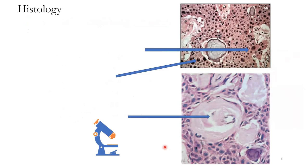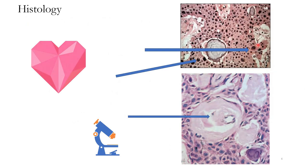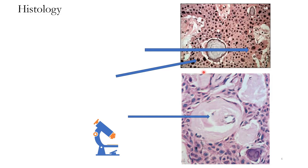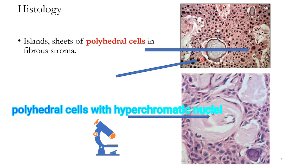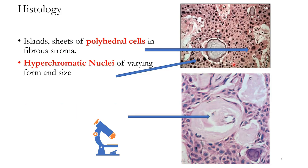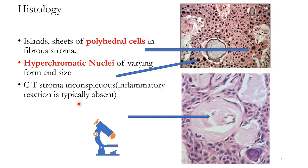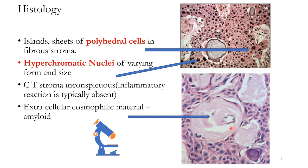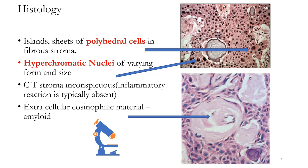Histopathologically, CEOT has very unique features. The cells are polyhedral, the outline of each cell can be appreciated clearly, and the nuclei are hyperchromatic and can vary in size. The stroma is fibrous, and inflammatory reaction is typically absent. There is also extracellular eosinophilic material present, referred to as amyloid, which can undergo calcification to form concentric rings.